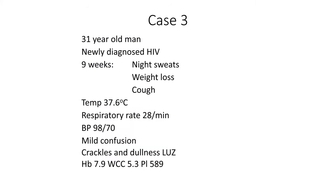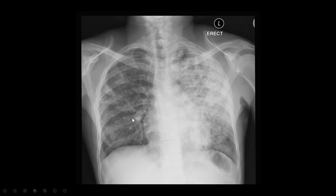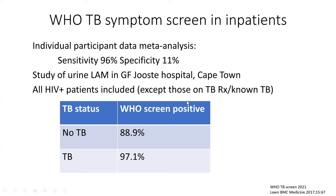The third case is a 31-year-old man, newly diagnosed, with nine weeks of typical TB symptoms. His respiratory rate was moderately elevated, he was a little confused, with crackles and dullness in the left upper zone. Haemoglobin low, white cell count normal. It's not uncommon to see features of bacterial sepsis in HIV-positive people with TB, as in this patient. He had a chest x-ray showing asymmetrical but bilateral infiltrates with some areas of cavitation — a case of TB.